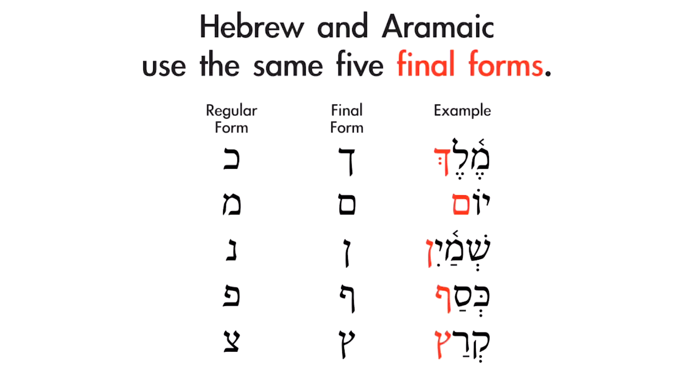In the example column on the very right, you can see the five final forms in action. In the first word, Melech, you see the final Kaf with the Shewa in it. In the second example, Yom, you'll see the final Mim; Shemayan, the final Nun; Kasaf, the final Pei; and Karatz, the final Tsare. These are the five final forms that you must memorize before you move on. If you don't already have these, take time to know exactly how they're written and where they appear at the end of a word.